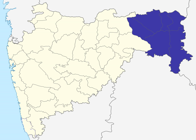Nagpur Division is one of six administrative divisions of Maharashtra State in India. Nagpur is the most eastern division in the state, with an administrative headquarters in the city of Nagpur. It covers 51,336 km². The Amravati and Nagpur divisions make up the region of Vidarbha.